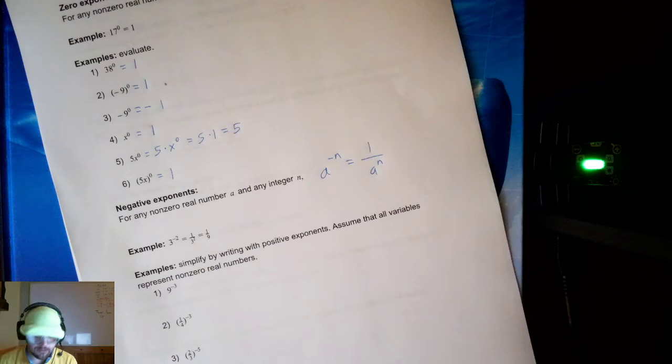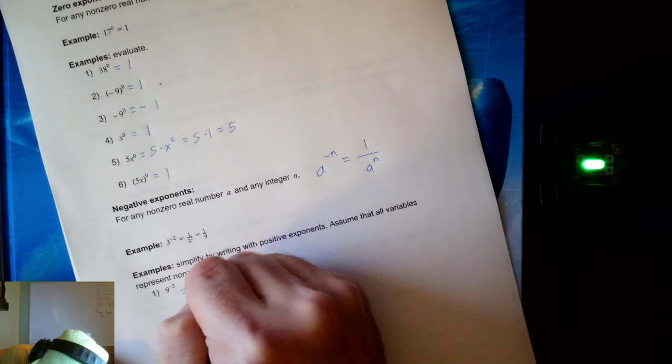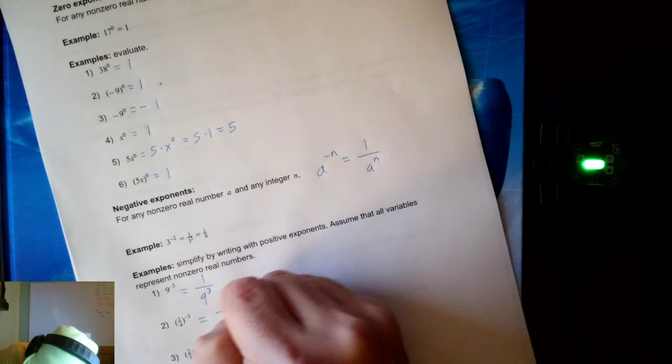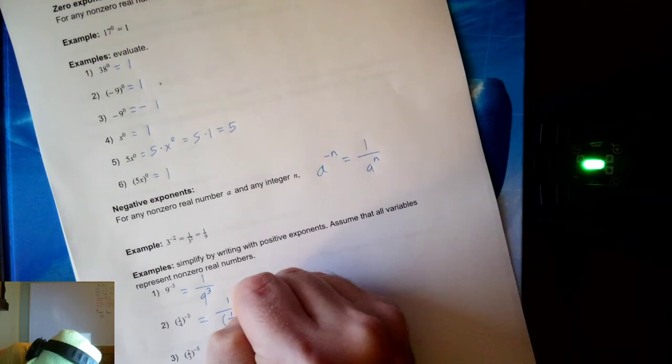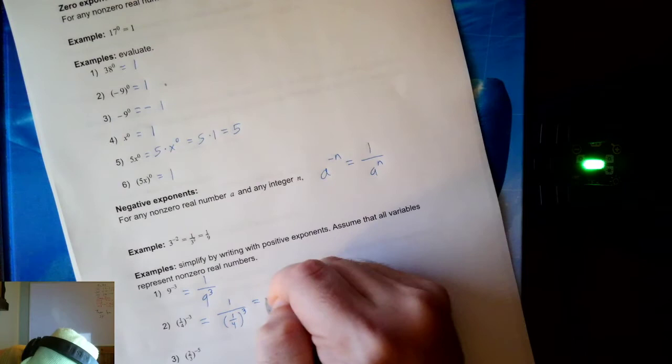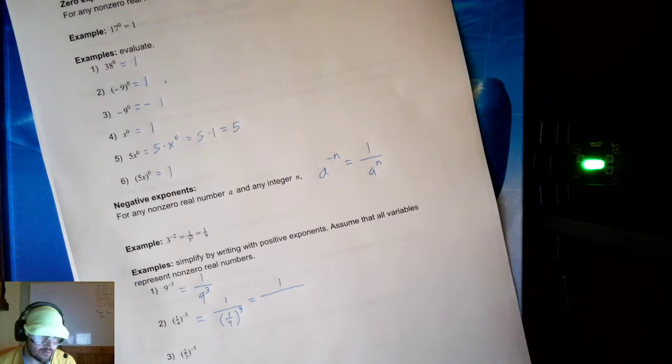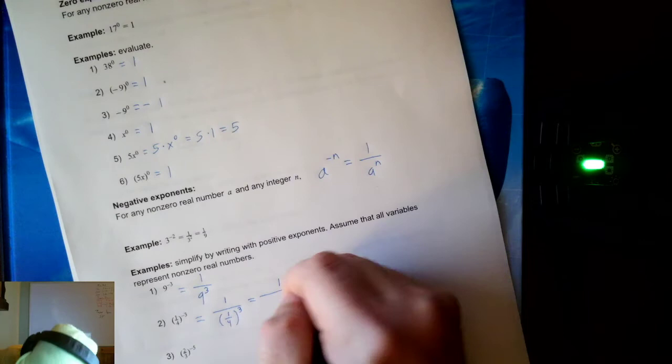Let's take a look. Nine to the negative three would be equal to one over nine to the three. One quarter to the negative three — we need to be careful. It's going to be one over one quarter to the third. Now let's work with this a little bit. We'll have one in the top; in the bottom, this three will get applied to both the one and the four — that's one of the power rules from section 5.1. So we get one to the third over four to the third, which is one over four to the third.